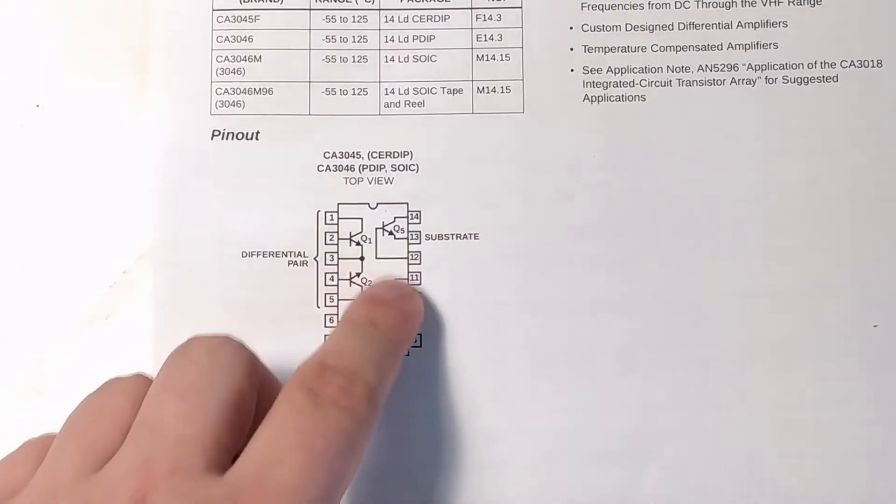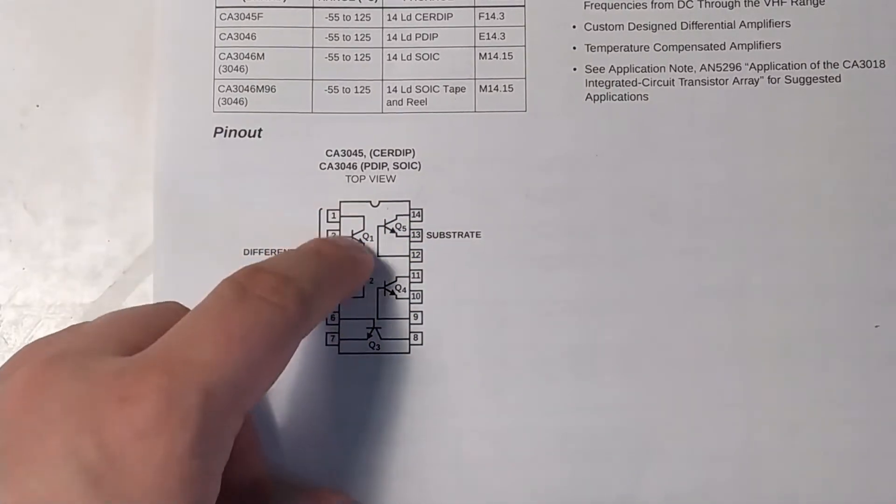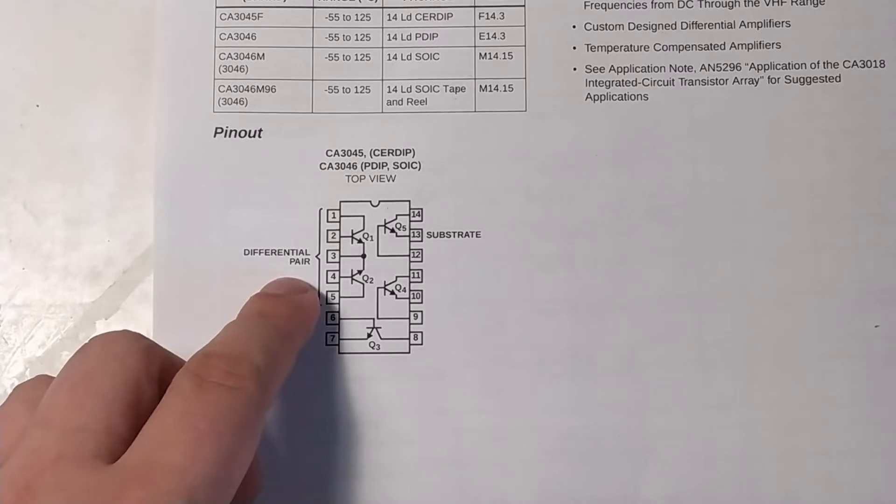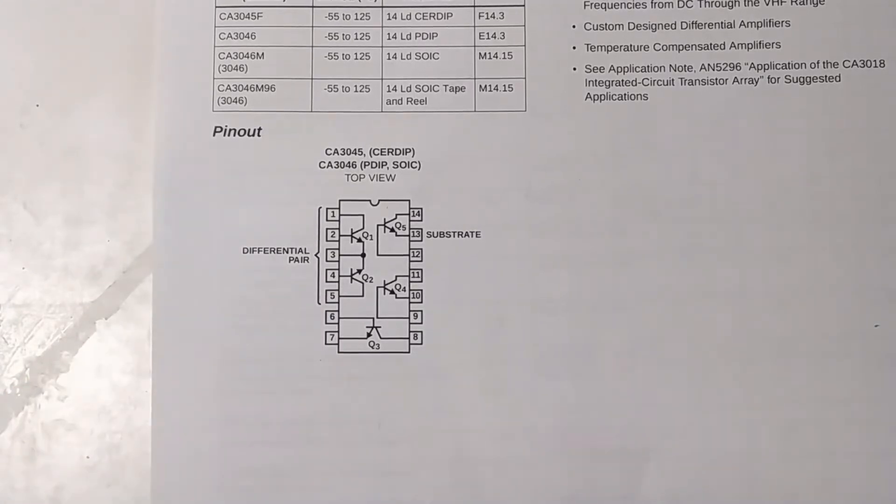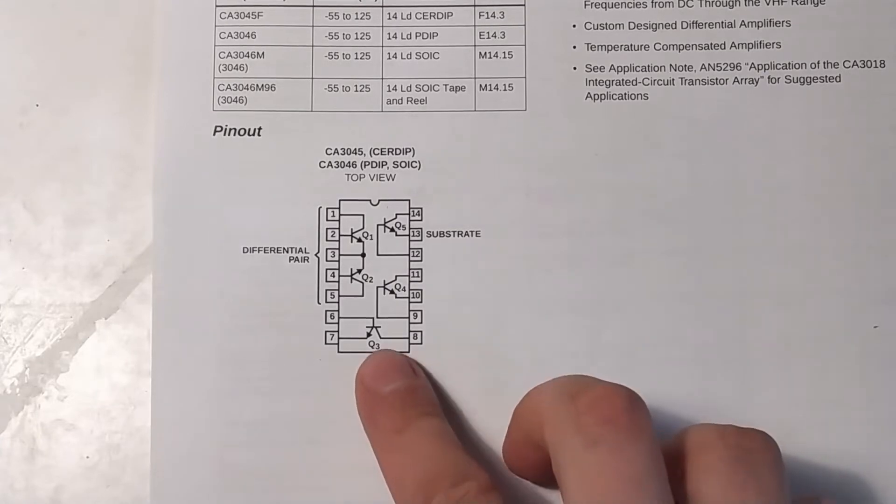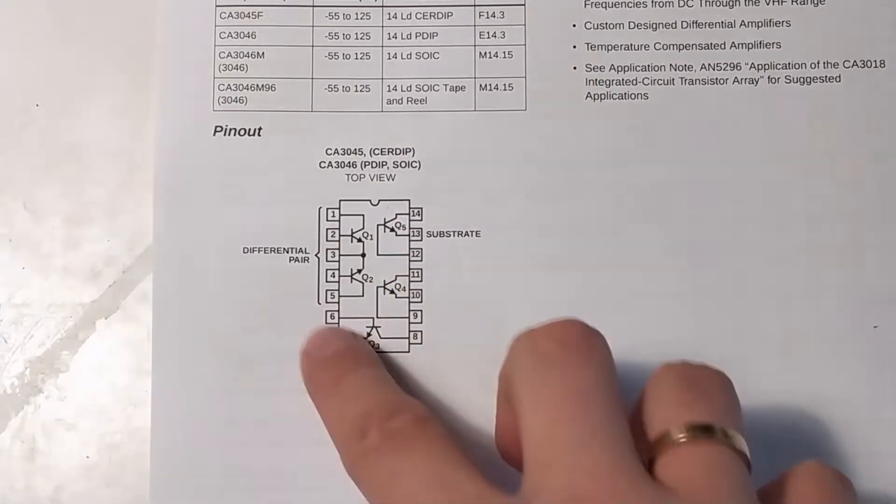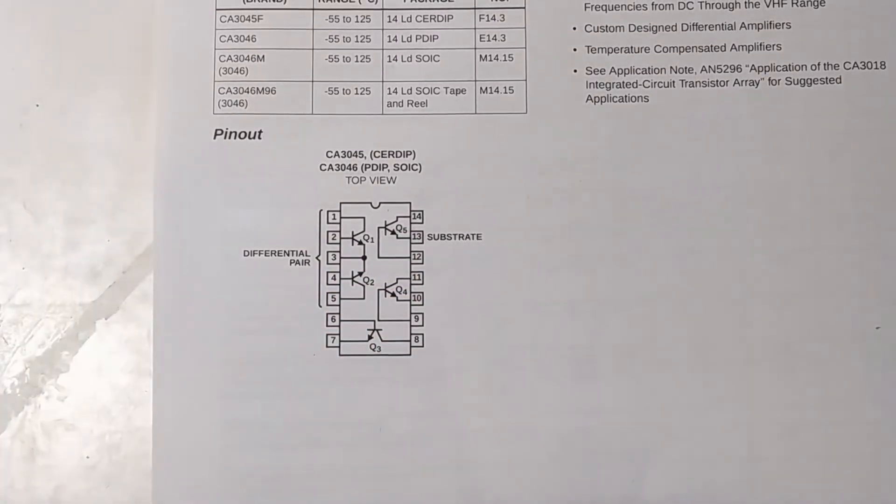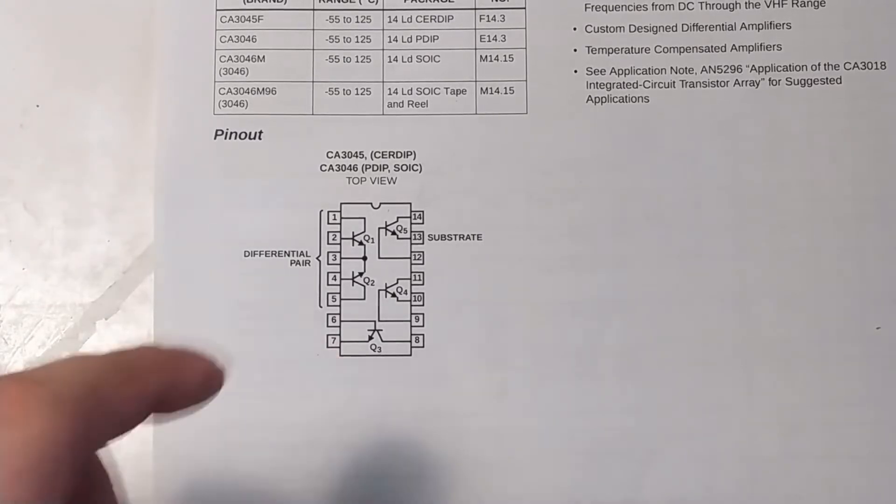It just has single transistors here, and then it has one differential pair over here, which is helpfully labeled differential pair. You can do some really cool things with that, because you just have single transistors. But then you ask yourself, why wouldn't I just use five transistors? Why do I have to buy this chip?